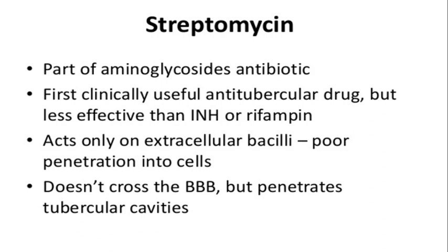Pharmacokinetics: absorbed very poorly from the intact gastrointestinal tract, so intramuscular injections are usually administered, or as a 30- to 60-minute infusion. Normal half-life is 2–3 hours, but in renal failure patients it is reduced to 24–48 hours. Treatment dose: adults 20–40 mg/kg per day daily for several weeks, followed by 1 to 1.5 grams 2 or 3 times weekly for several months.